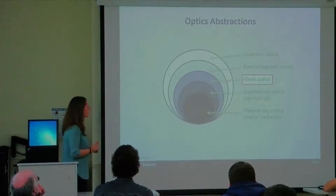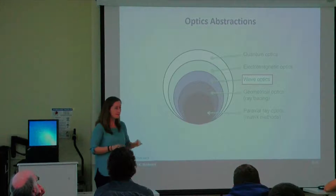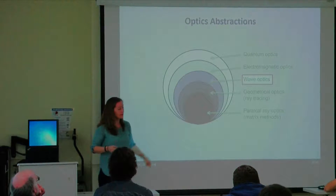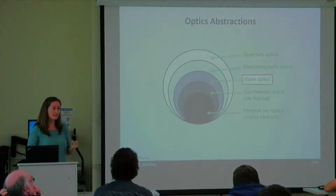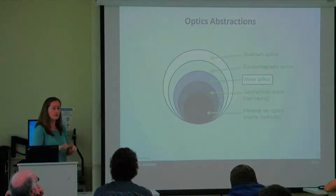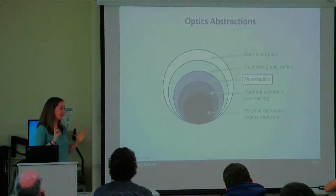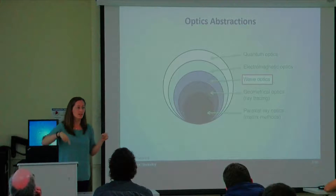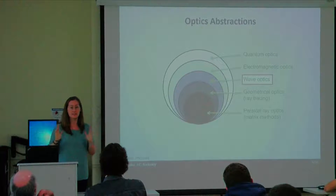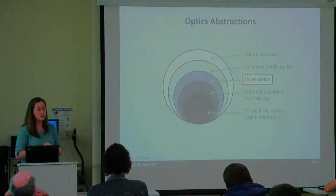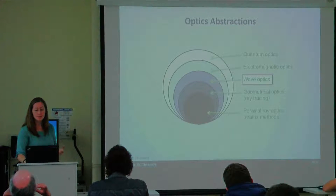We work in wave optics, not just ray or geometrical optics. Light is a wave — it has an amplitude and a phase. A sinusoid has both. So all our wave optics work requires us to think about phase — how shifted is this sinusoid? — and how phase affects our images.